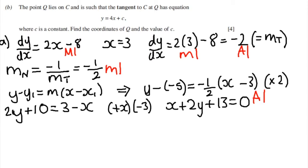Okay, let's look at part b. Part b says the point Q lies on C such that the tangent to C at Q has the equation y equals 4x plus c where c is a constant. Find the coordinates of Q and find the value of c. Essentially what we are saying is this equation y equals 4x plus c is a tangent to the curve y equals x squared minus 8x plus 10.